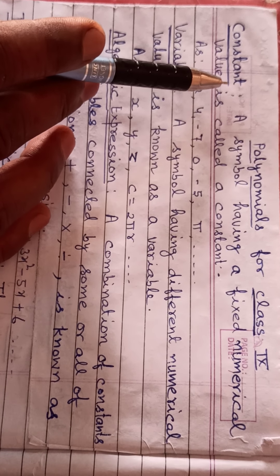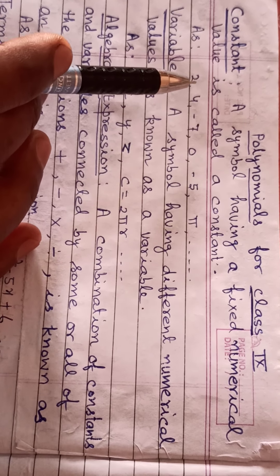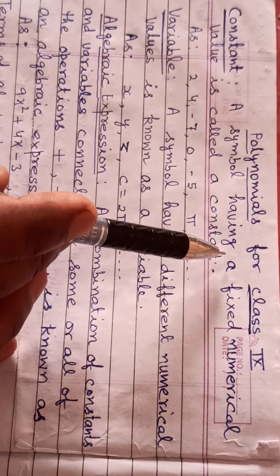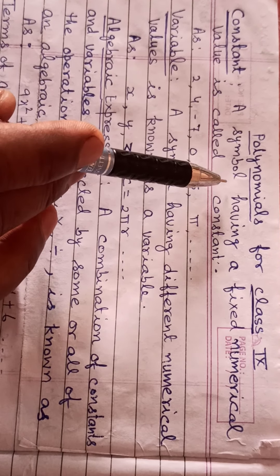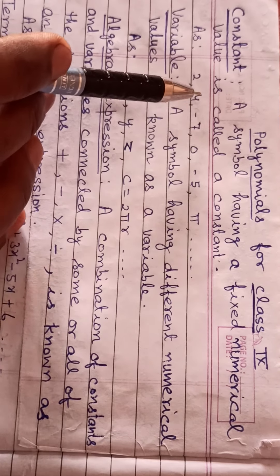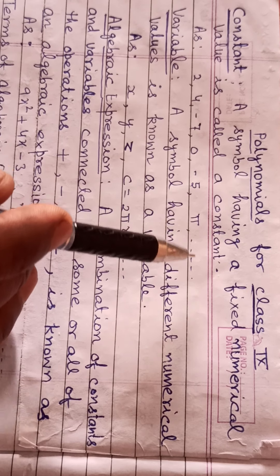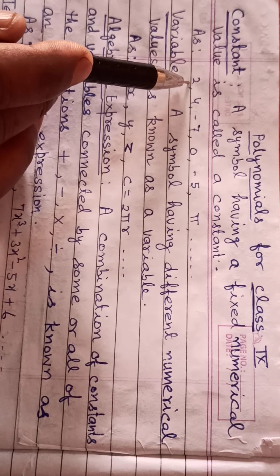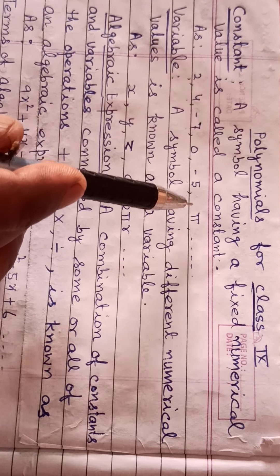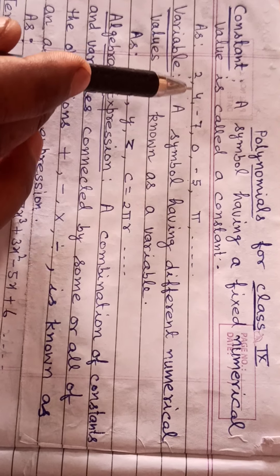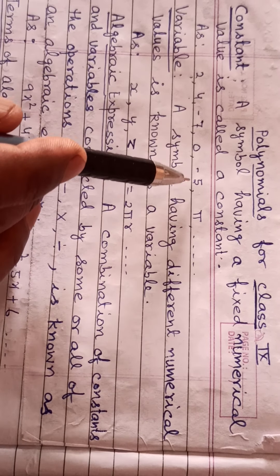Constant — I think you will be familiar with constant and variable. A symbol having a fixed numerical value is called a constant. It means a number whose value does not vary, such as 2, 4, minus 7, 0, minus 5, pi and so on. These are called constants. Their values do not vary.